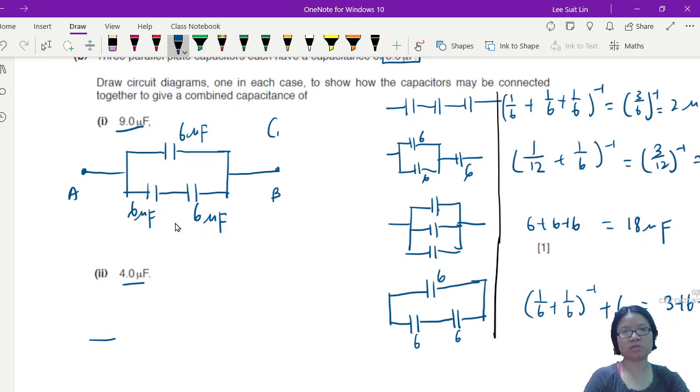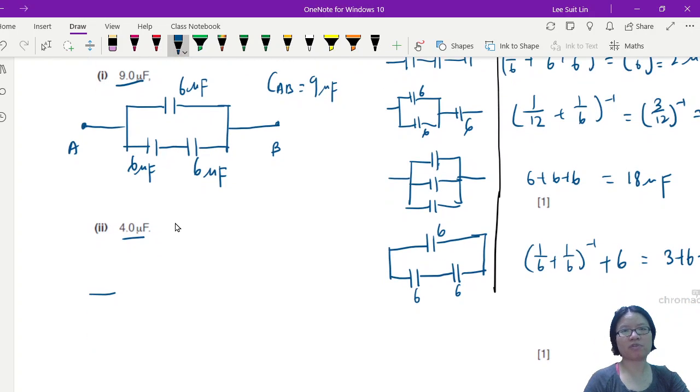Alright, and then you just want to be very extra also can. So 4.0 microfarad will look something like this: you will have two of them in parallel and the other one in series with the parallel connection.